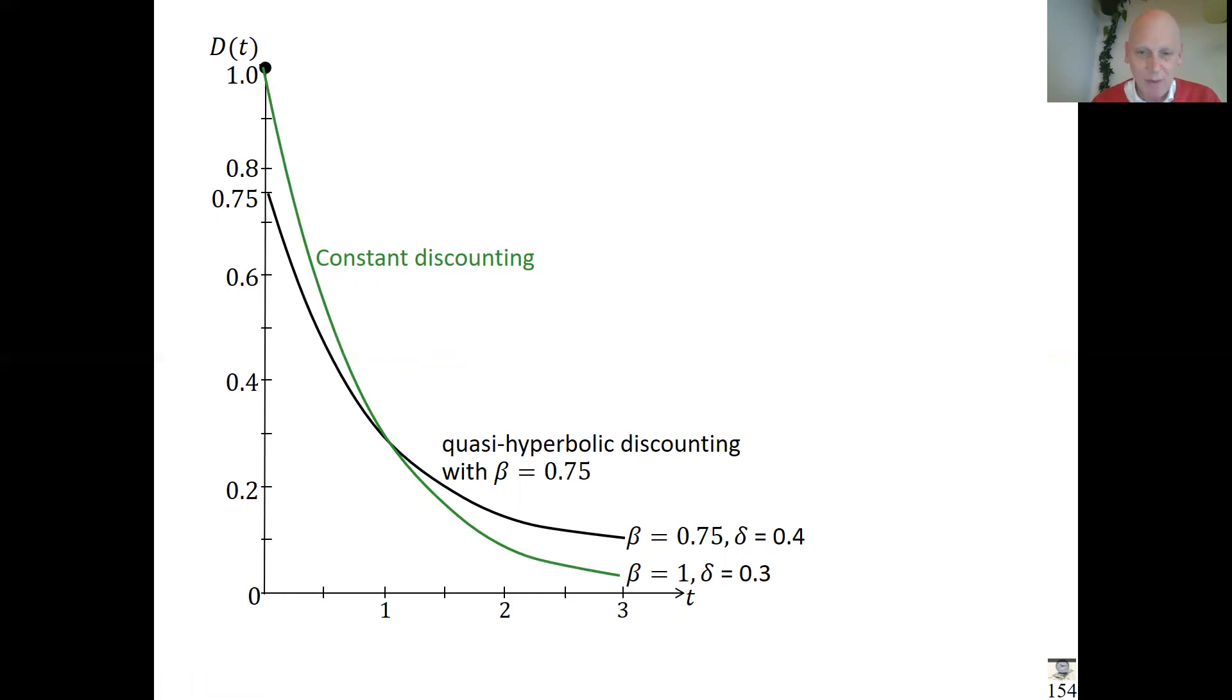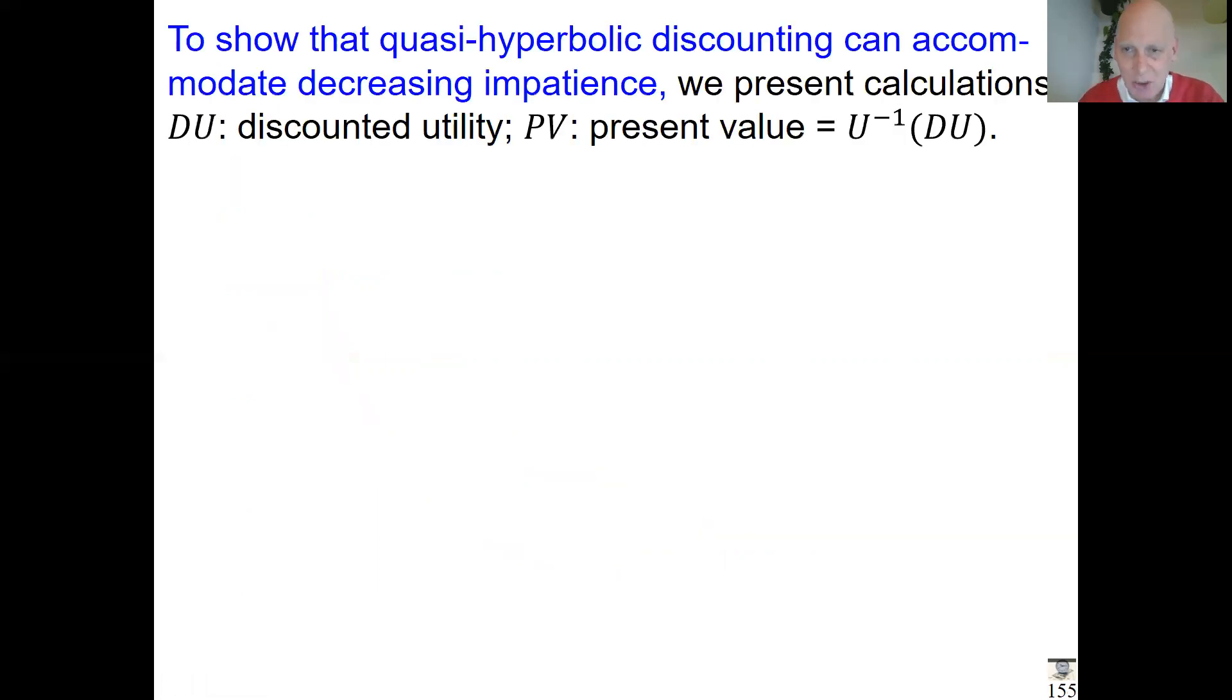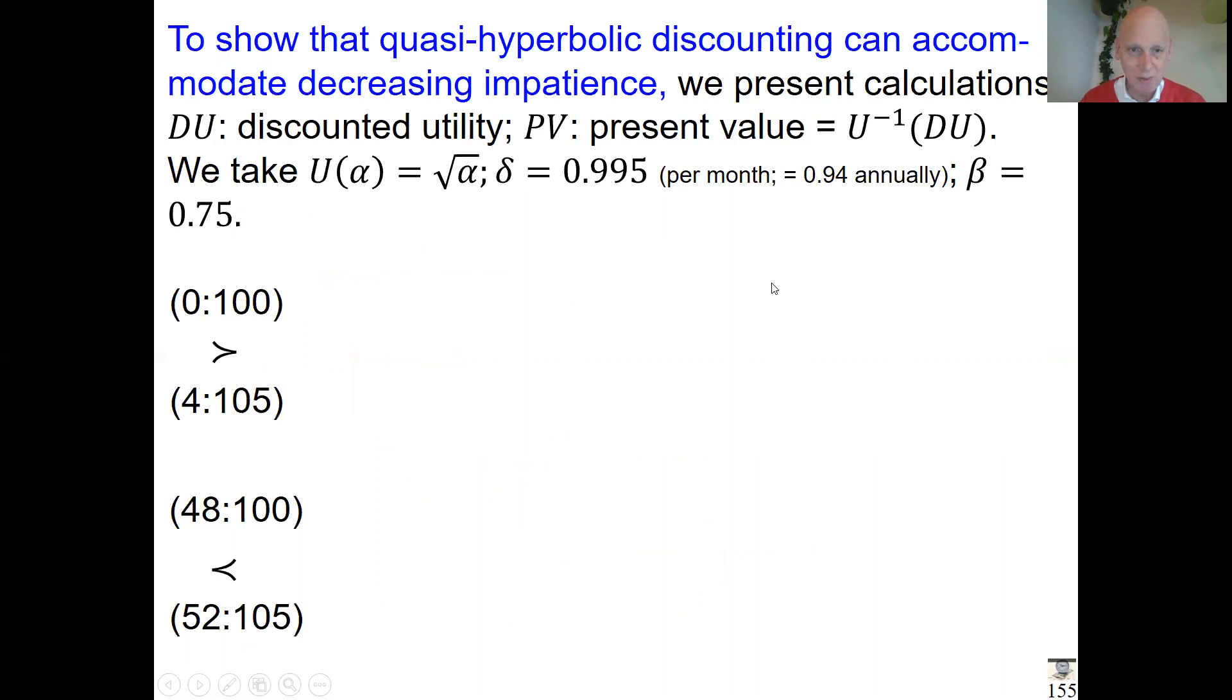Some calculations to show how it goes. Square root utility, delta a reasonable number empirically speaking per month, and beta 0.75, which indeed psychologically we find. The standard example: 0:10 versus 4:105 and 48:100 versus 52:105—that's four years.